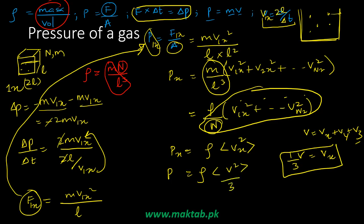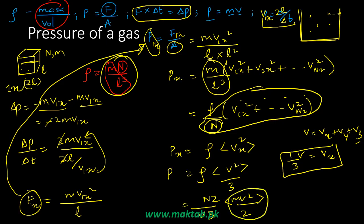Now we rewrite this in terms of kinetic energy. Replacing density with m over volume and multiplying and dividing by 2 gives us (1/2)mv² — which is the kinetic energy expression. This leads us to the ideal gas equation.